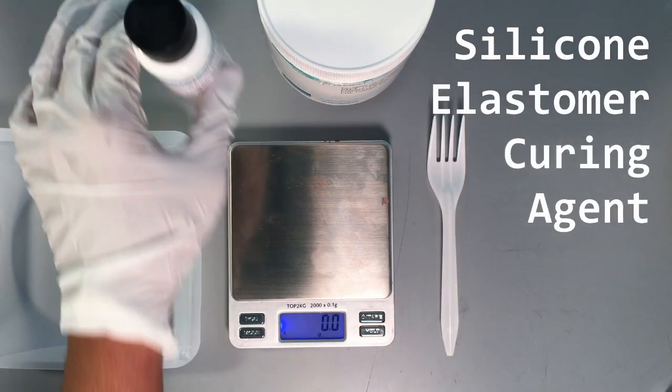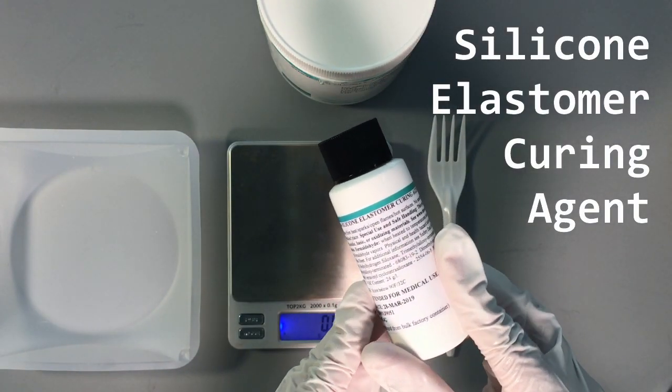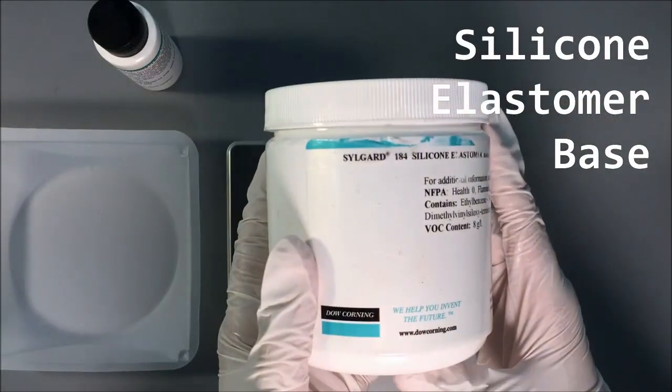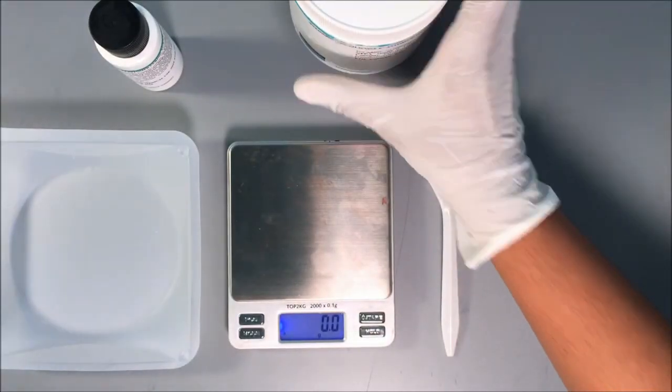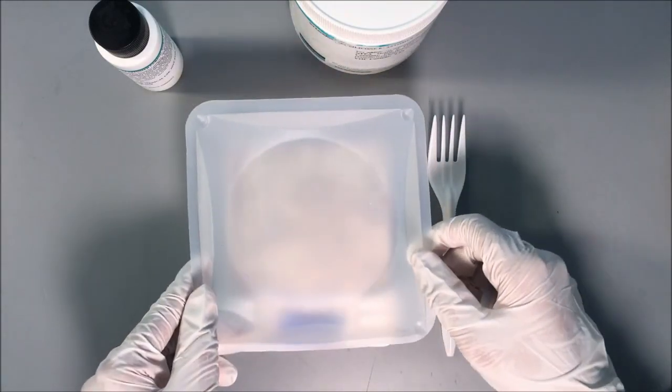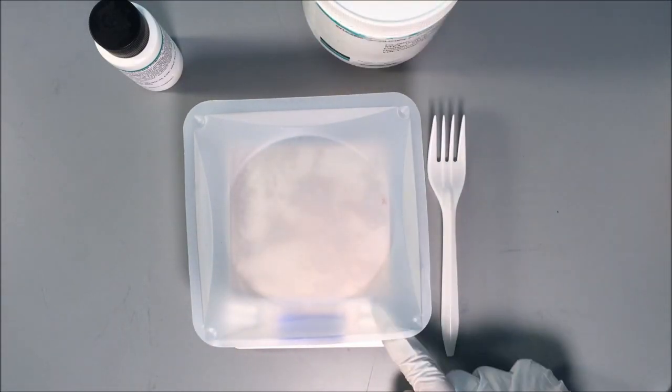You will need silicone elastomer curing agent and silicone elastomer base. Turn on your digital scale and place your plastic weighing tray on it. Make sure you've tared.